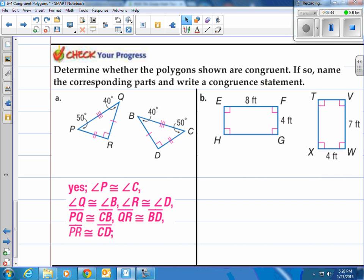So what are some congruent statements we can write? Well, let's match up our parts first. Angle P is congruent to angle C, angle Q is congruent to angle B, angle R is congruent to angle D. PQ and CB are congruent, QR and BD are congruent, and PR and CD are congruent. Now to write the actual congruent statement, we've got to make sure we match up our vertices that go together.